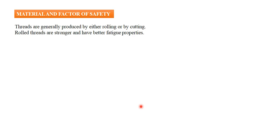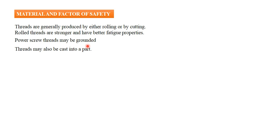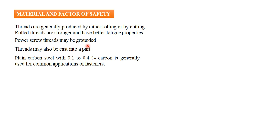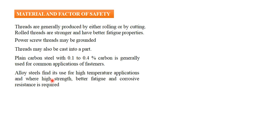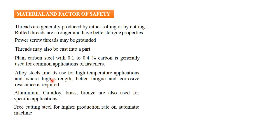There are different materials we can use based on application and manufacturing method. Threads can be cut by machining or rolling, but rolled threads are stronger as they give better fatigue properties because compressive stresses are induced at the root during rolling. Power screw threads may be ground to avoid stress raisers. Different materials include 0.1 to 0.4 percent carbon steel for common applications and alloy steel for higher temperature and corrosive environments.